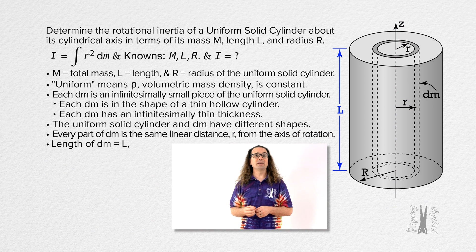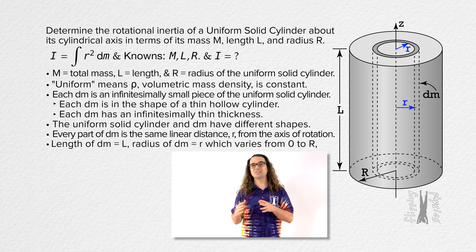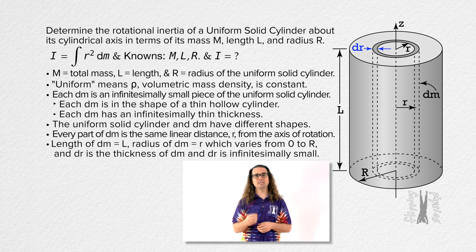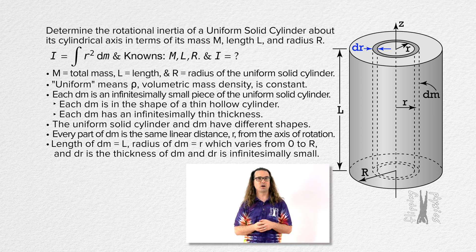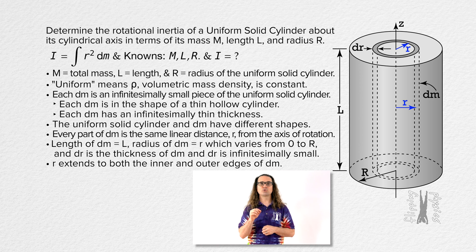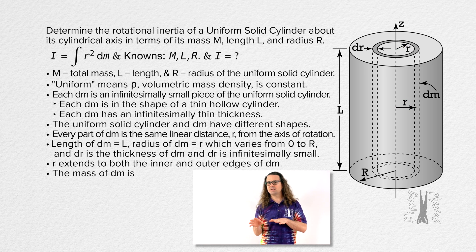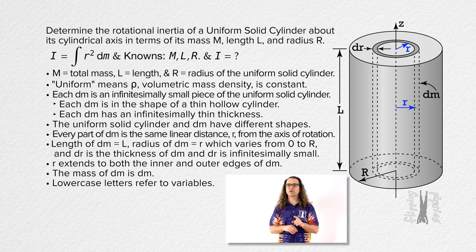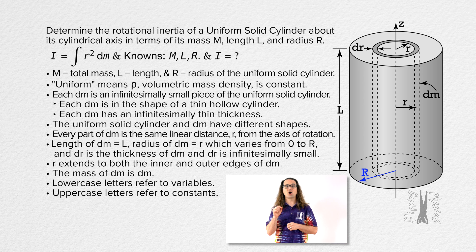The length of dm is capital L. The radius of dm is lowercase r, which varies from zero to capital R, and the thickness of dm is an infinitesimally small thickness dr. Because the thickness of dm is infinitesimally small, the radius r of dm goes to both the inner and outer edges of dm. Also, the mass of dm is dm — remember the difference: lowercase r refers to the variable radius of dm, whereas uppercase R refers to the constant radius of the uniform cylinder.